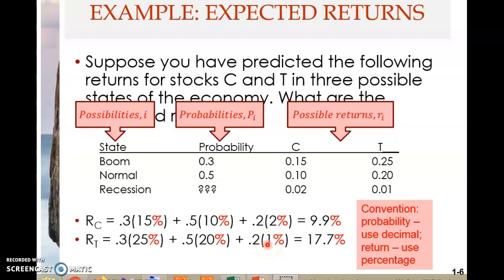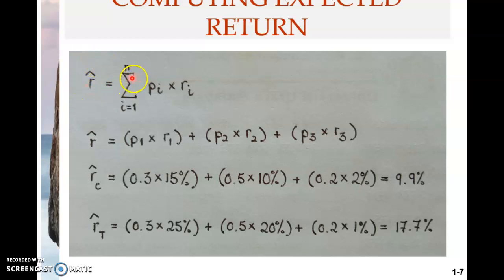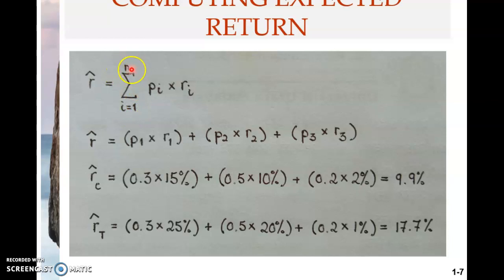Let's look at the formula in greater detail. I prefer using this formula rather than the formula given in the textbook. This is called R-hat — R stands for return, so R with the hat is called the expected return. This is the summation sign; i stands for possibility, scenario, or state. The formula has n states, i from 1 to n. P stands for the probability of possibility i, multiplied by the possible return given state i.